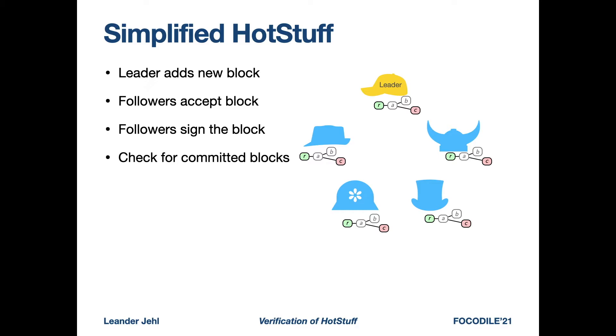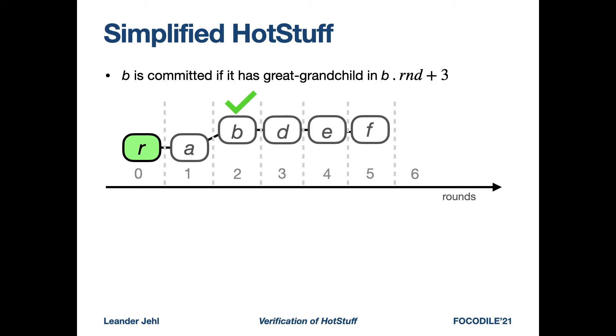So as the last step, processes check for committed blocks. A block B is committed if it has a great grandchild in the next three rounds. In the figure, block B has a child D, a grandchild E, and a great grandchild F. The round of F is 5, which is the round of B plus 3. Thus, in this tree, B is committed.